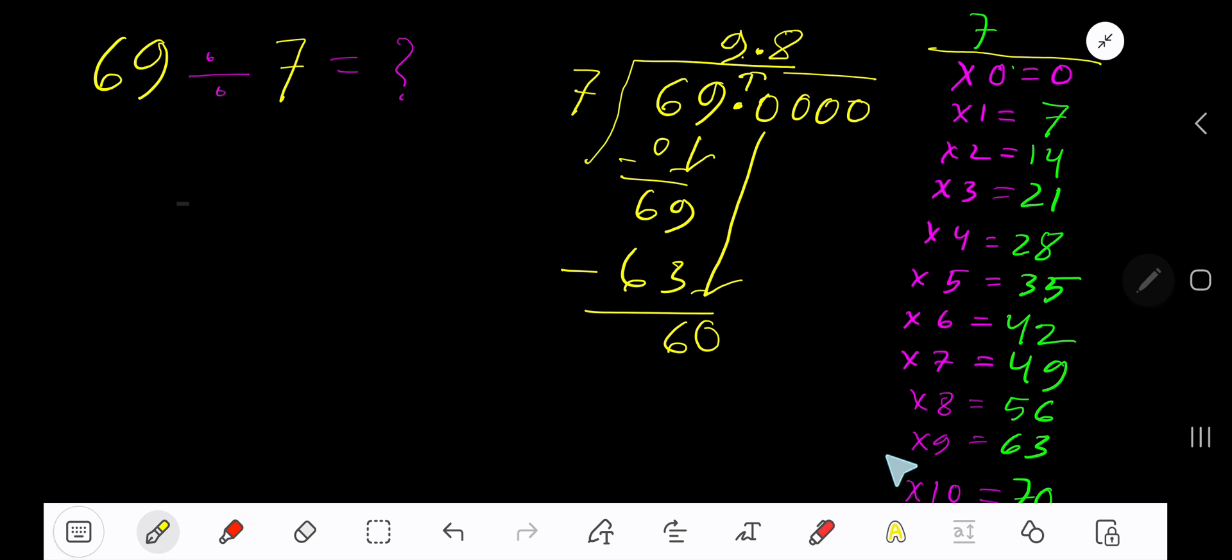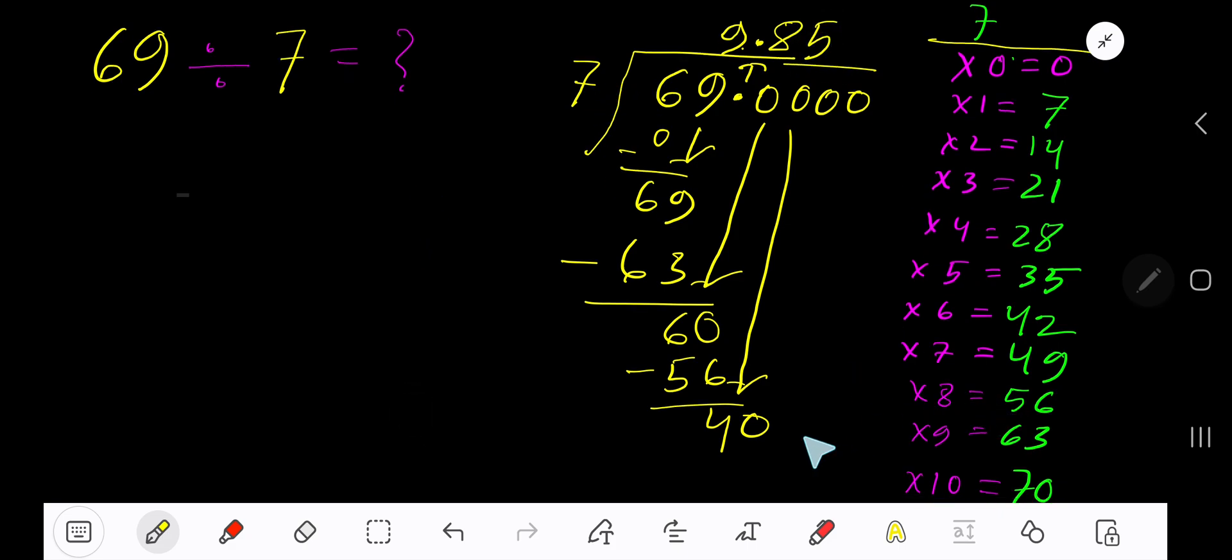Bring down another 0. 7 goes into 40 how many times? 6 times 42, which is greater, so 5 times. 5 times 7 gives you 35. Subtract, you are getting 5.